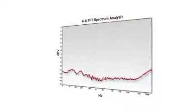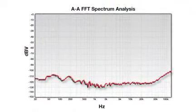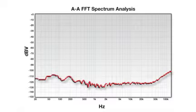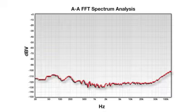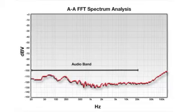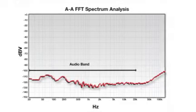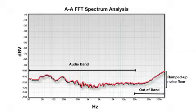In this example, our codec, the TI TLV320AIC3254, is operating at a sampling rate of 44.1 kHz. Sampling theory tells us that the DAC can output up to half of the sampling rate, or 22 kHz, which is enough to cover the entire audio band. But outside that band, we see the noise floor ramp up by as much as 40 to 50 dB.